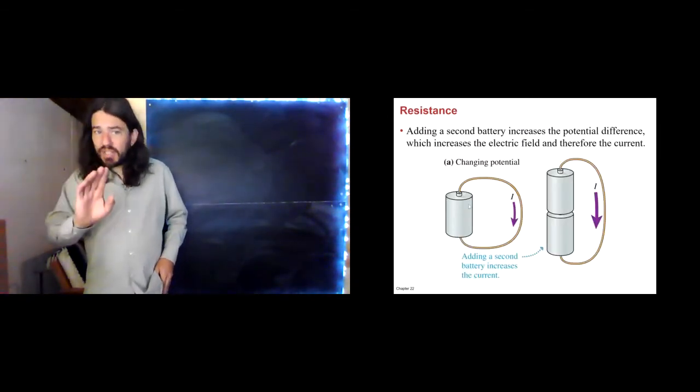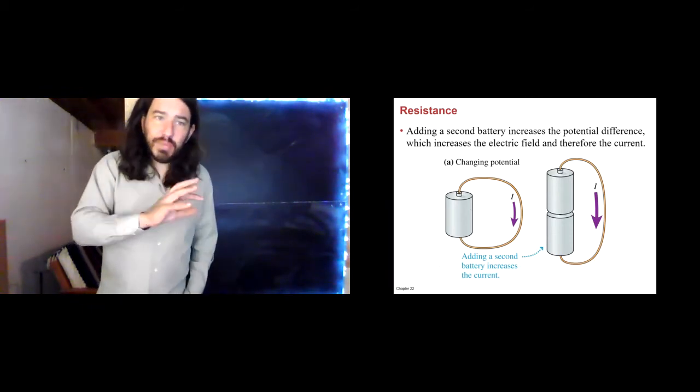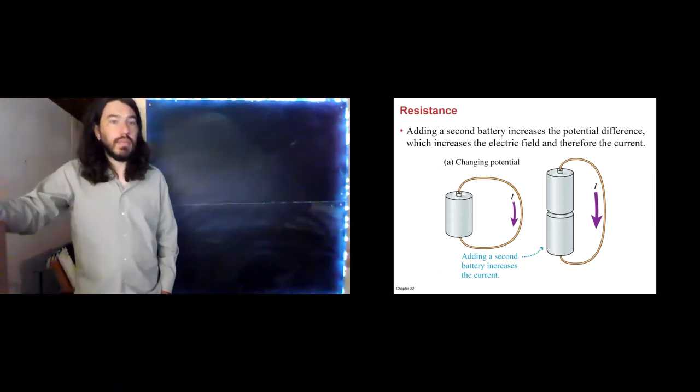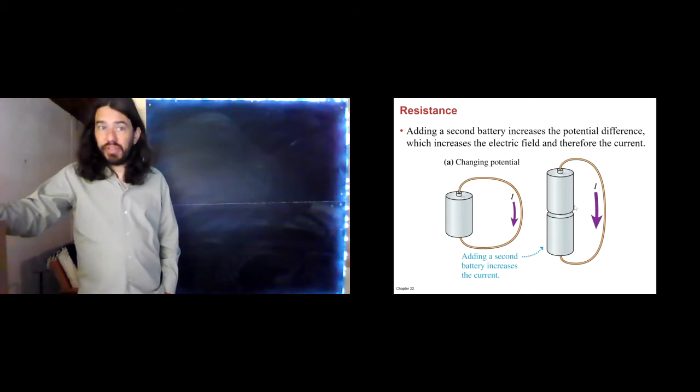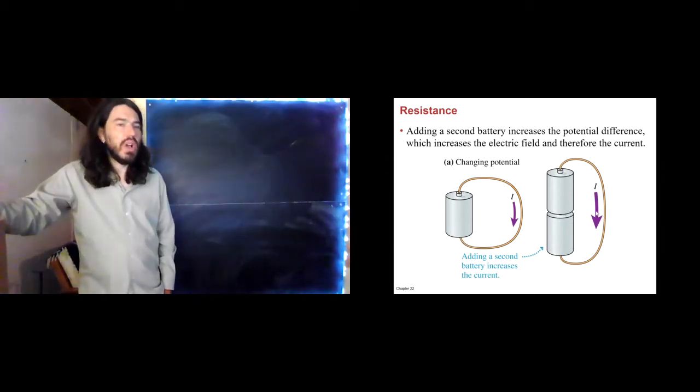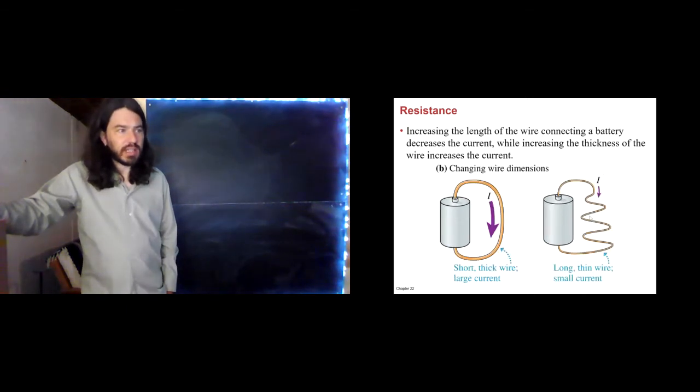So, let's think about that just a little bit. What factors determine how much current we might get in a wire if I hook it up to a battery? Well, we could use the same wire but different potentials. And with one battery, we would get a certain current. And it's probably not too surprising to you that if we stack two batteries in series, we will get a larger current. Seems pretty reasonable. So, greater potential means greater current.